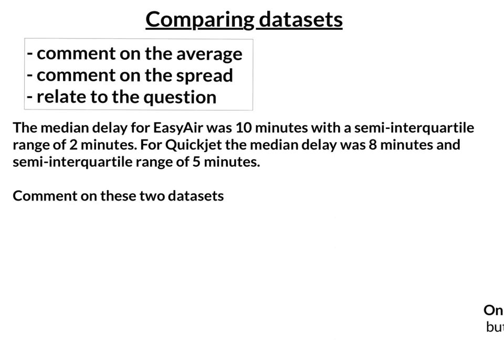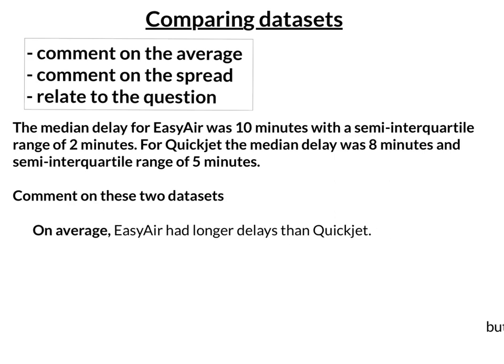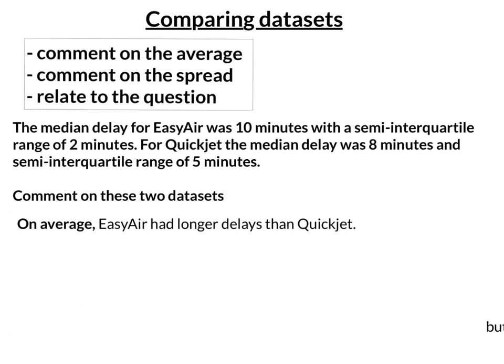What I would always do is start with the words 'on average' — that's why I put that in bold. So I'm comparing the two medians here. The median for Easy Air was 10 minutes compared to 8 minutes for Quick Jet. So on average, Easy Air had longer delays than Quick Jet.